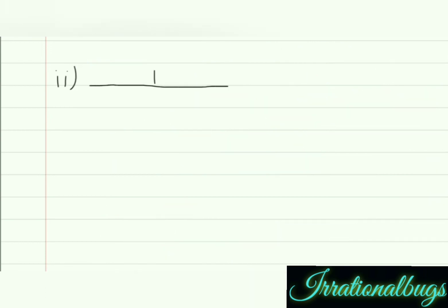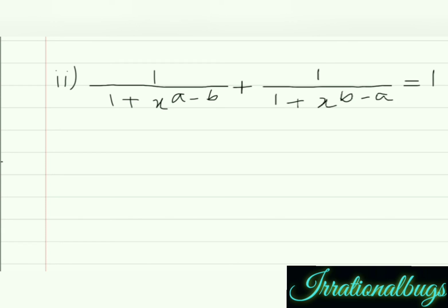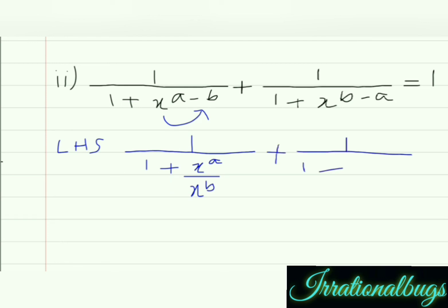Second part is: 1 upon (1 plus x raised to the power a minus b) plus 1 upon (1 plus x raised to the power b minus a) is equals to 1. Again, left hand side को solve करके हमें RHS के equal proof करना है, that is 1 करना है. x raised to the power a minus b को हम questioned law की left side से replace कर सकते हैं: x raised to the power a upon x raised to the power b. Plus, similarly xb upon xa लिख लेते हैं.